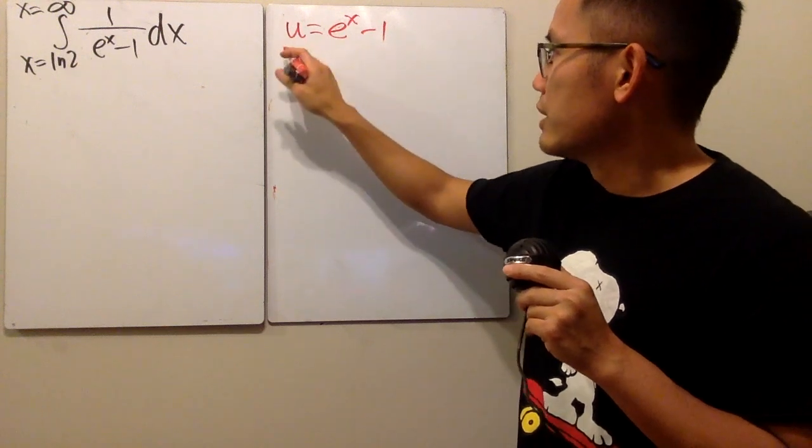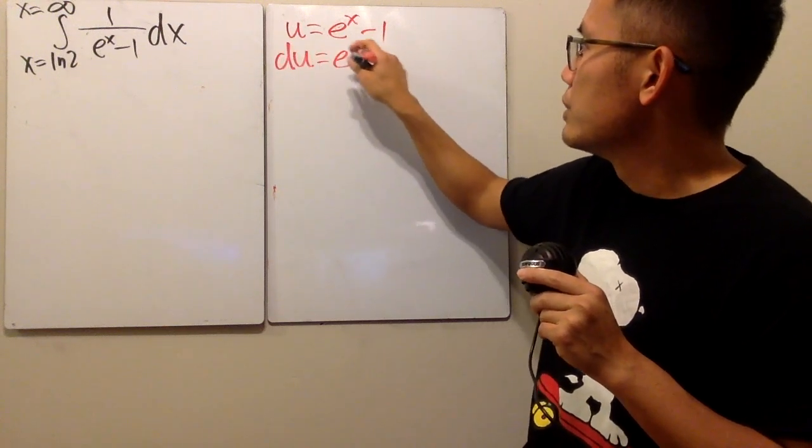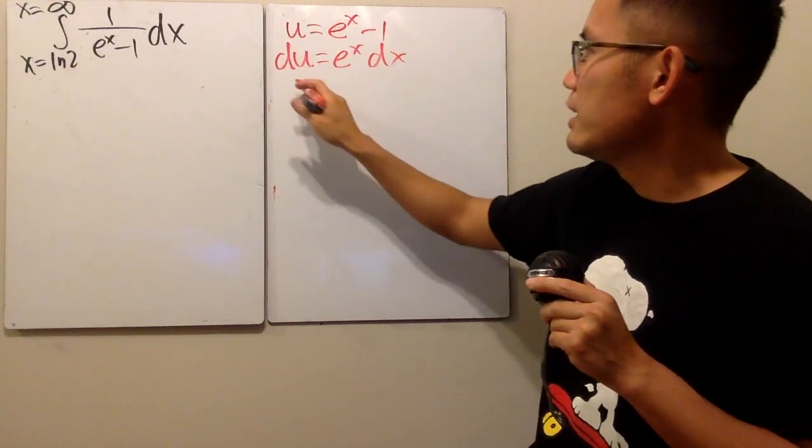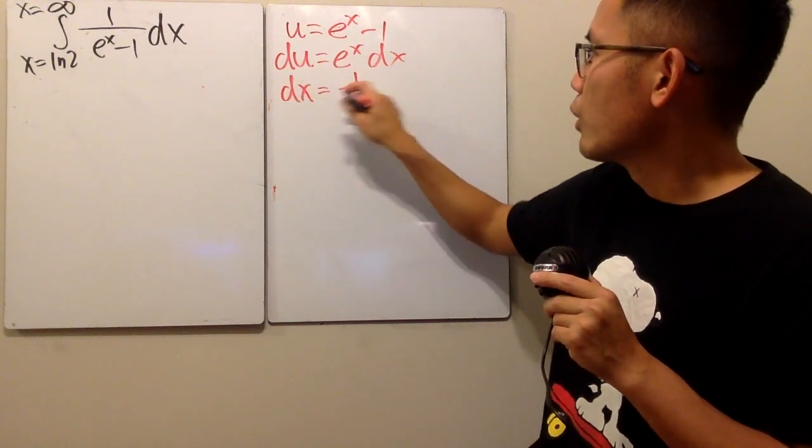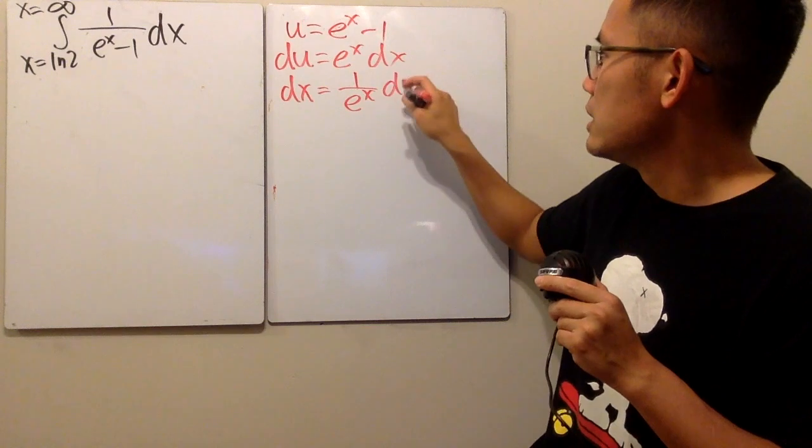And then the usual thing, du is equal to e to the x, and then we have dx, and then divide the e to the x on both sides, we get dx equals one over e to the x du. Very good.